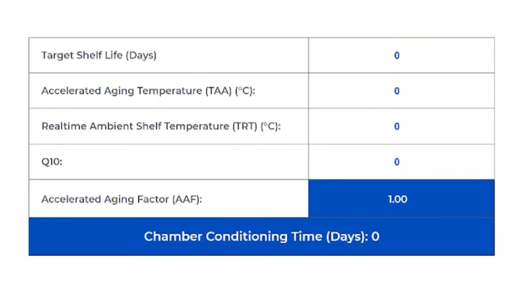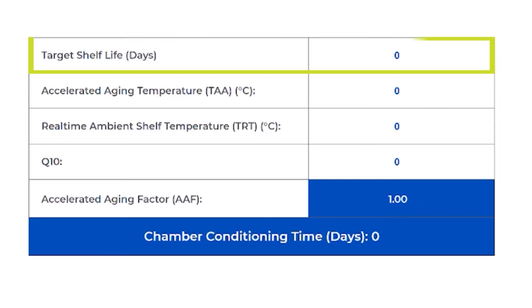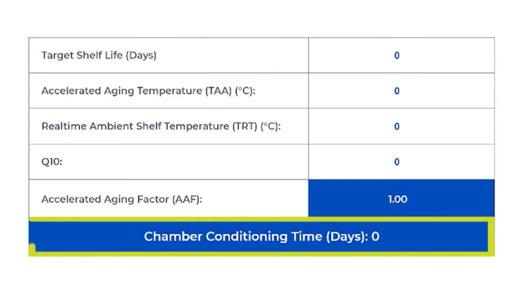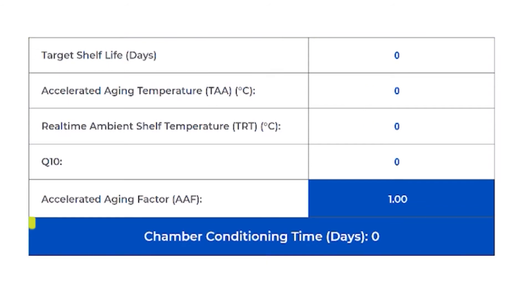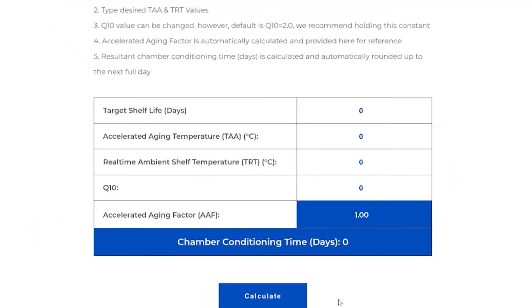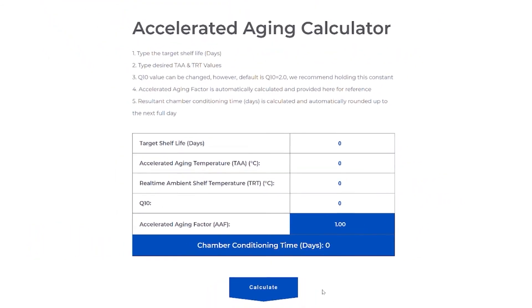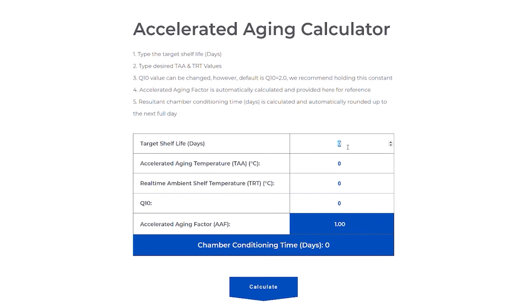Depending on what your shelf life expiration is will determine how many days your samples will have to endure accelerated aging. Our aging calculator is a great tool for estimating how many days your study will require.